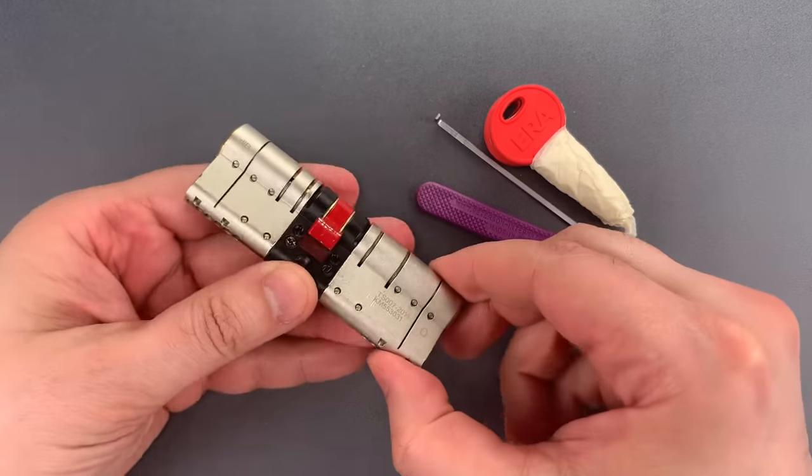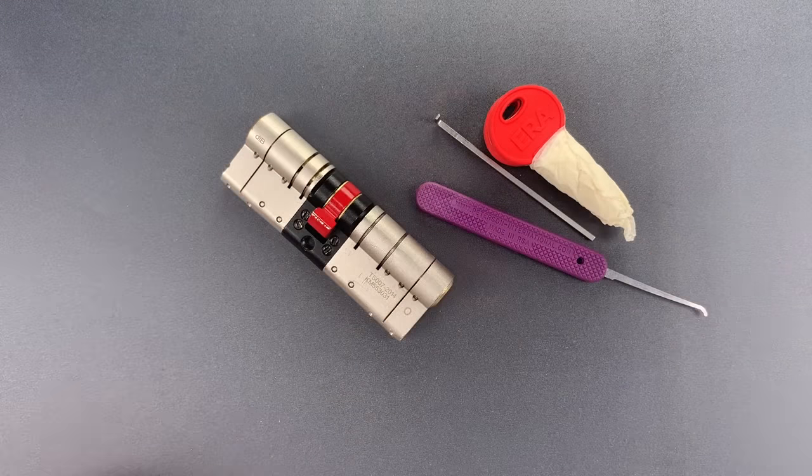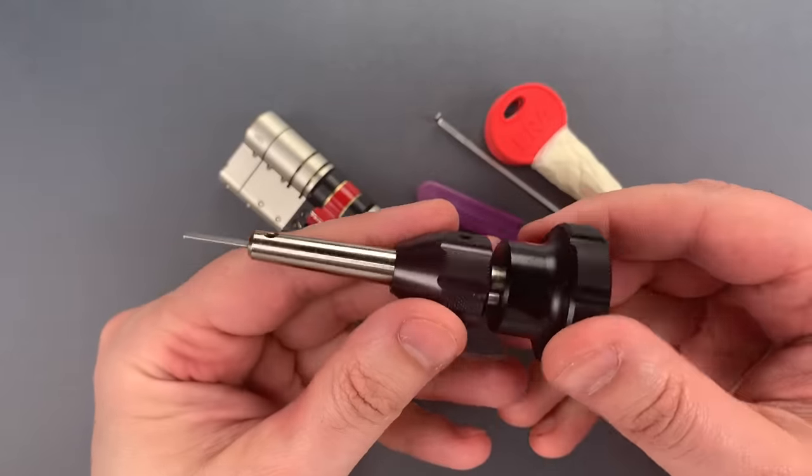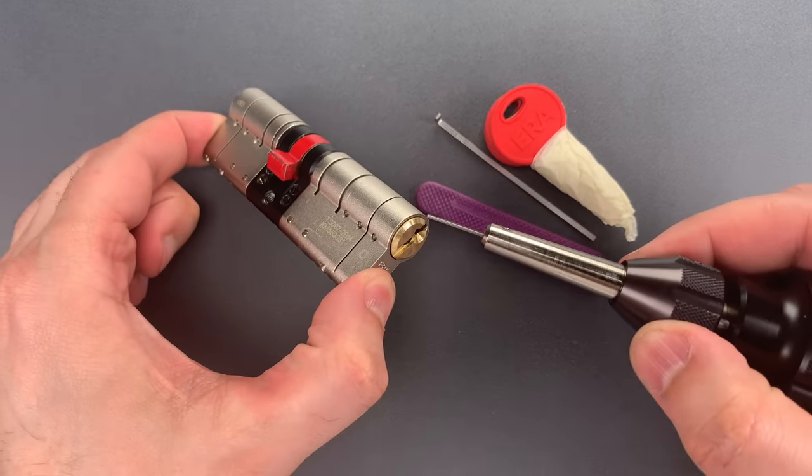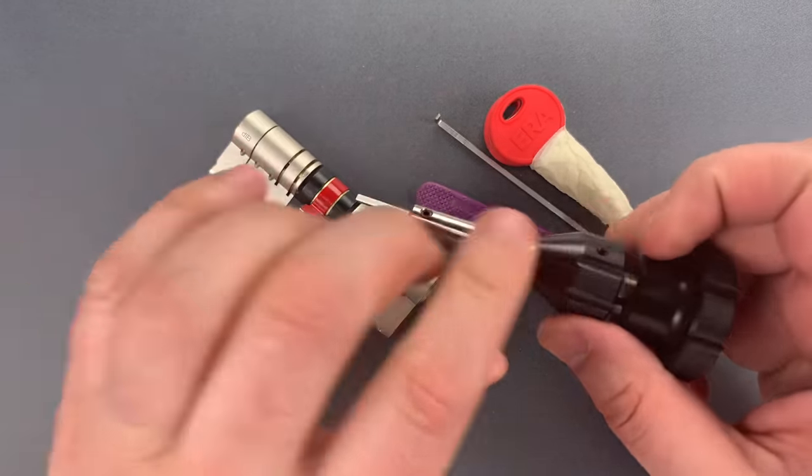So it's now time to take out my secret weapon, which is a plug flipper. What I'm hoping this will do is spin the core so quickly past the trap pins that they won't have enough time to drop down.